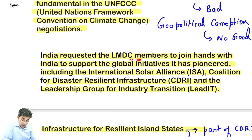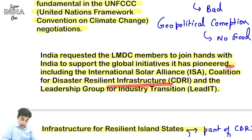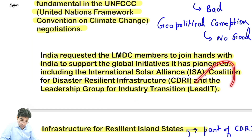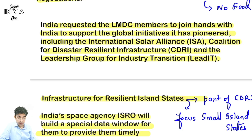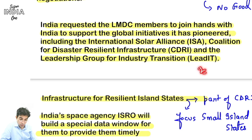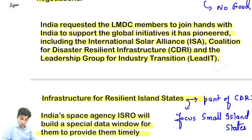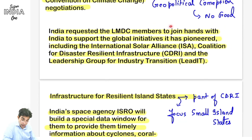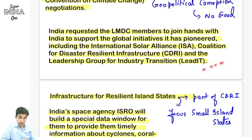Developed countries cheezein apne hisaab se modify karna chahti hain, toh us se developing countries ka interest hamper hota hai. LMDC apne negotiation yahan se dekhega. UNFCCC mein India ne request kiya LMDC members ko ki join hands India ke saath global initiatives mein. Humne International Solar Alliance banaya 2015 Paris mein. Island infrastructure bhi banaya hai - CDRI. Ab ek aur cheez boli: infrastructure for island states - jo dweep wale countries hain unka infra bhi better karo aur ek leadership group bhi hai industry transition ka.